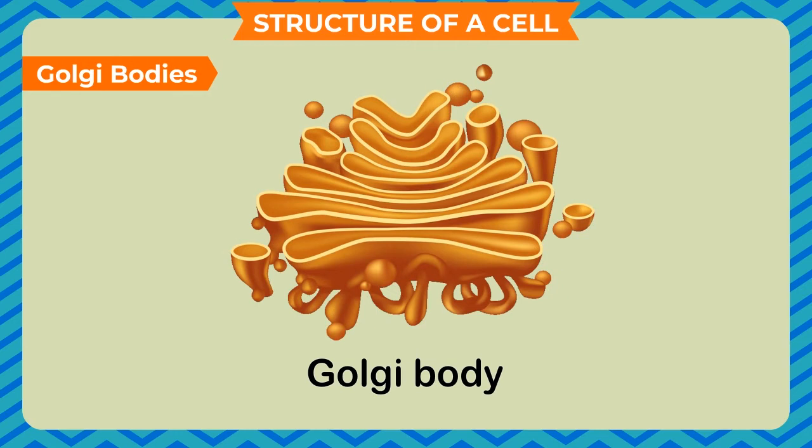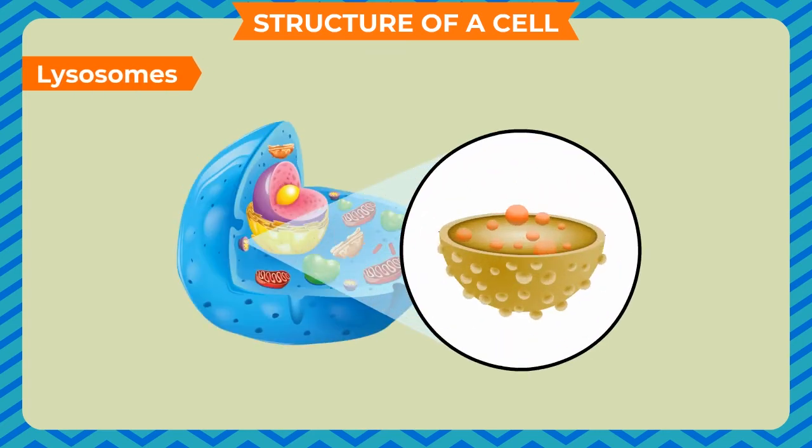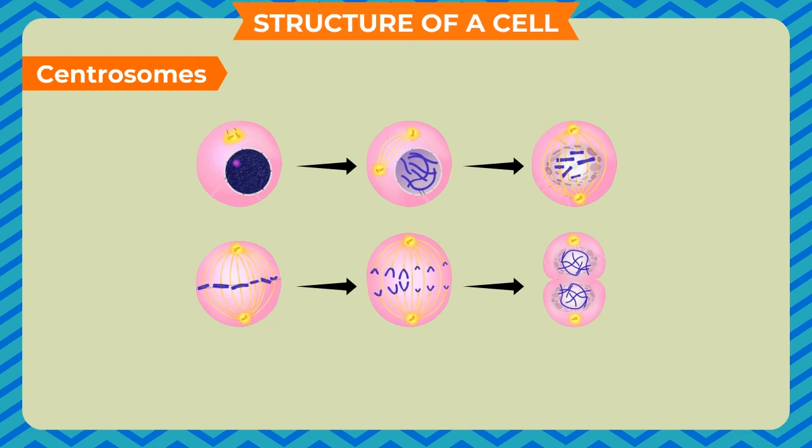Golgi bodies - they synthesize, store and secrete many substances. Lysosomes - they are present in animal cell and help in cellular digestion. Centrosomes - they are present only in animal cell. They are responsible for cell division.